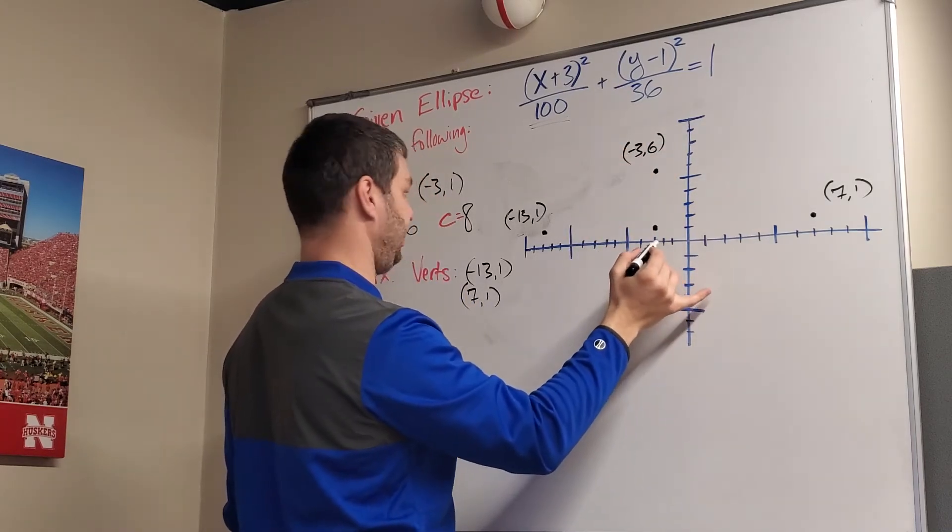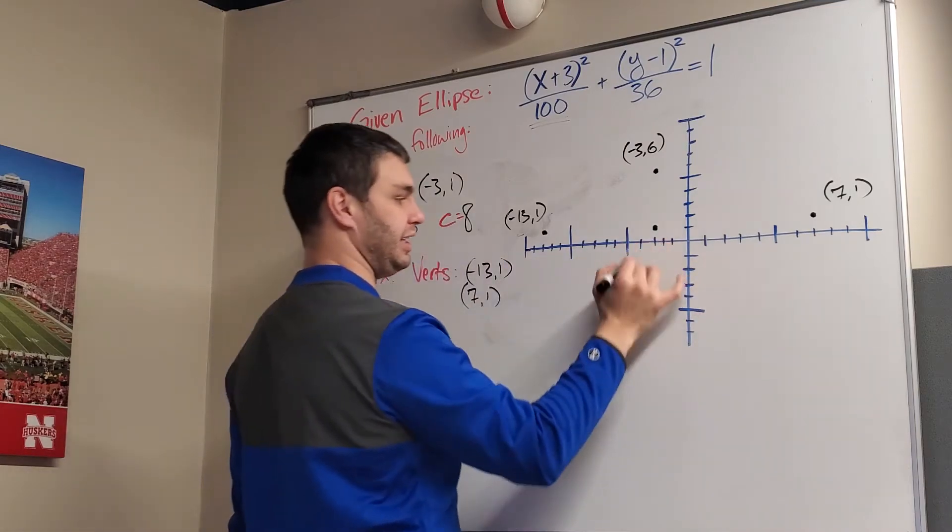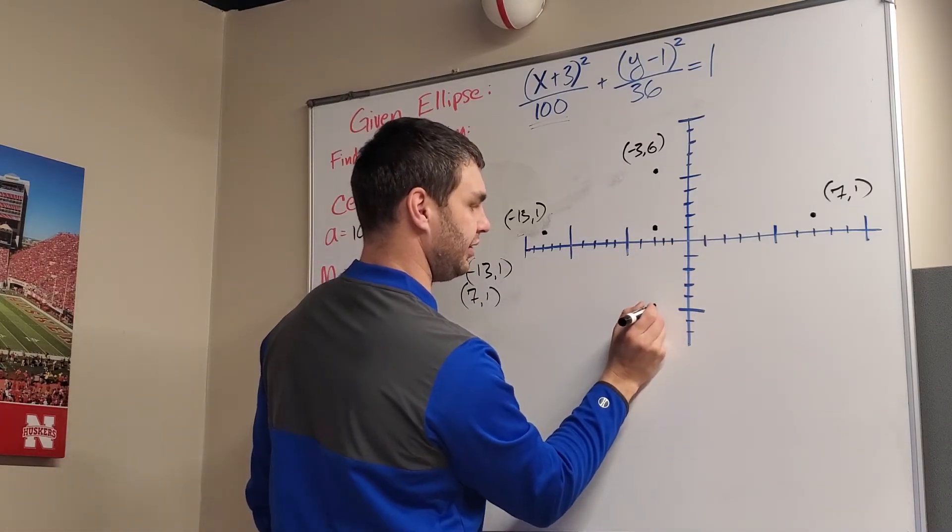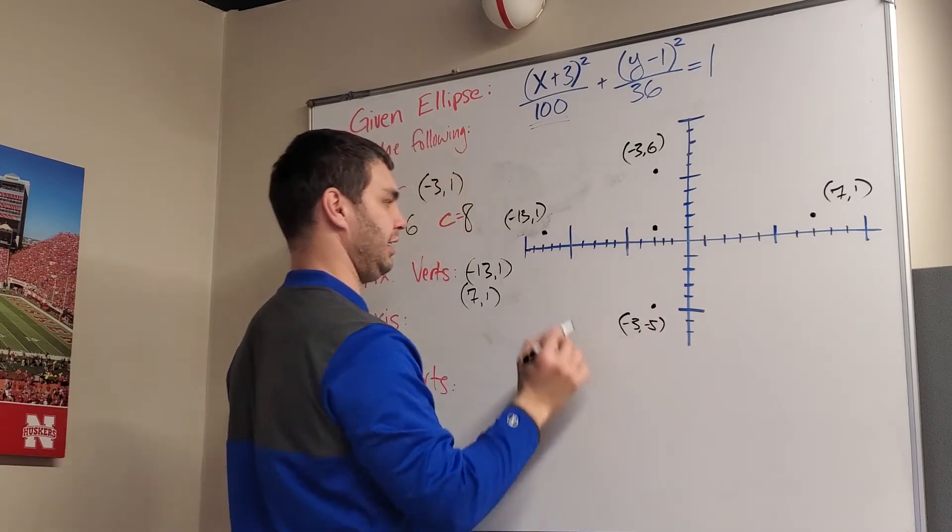And if I go down 6 spots, that's going to be (-3, -5). Negative 3, negative 5.